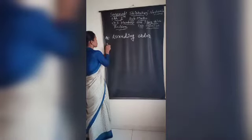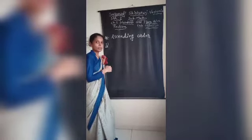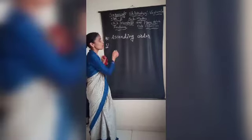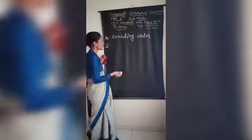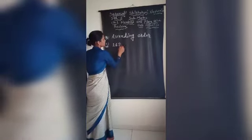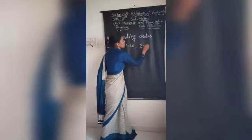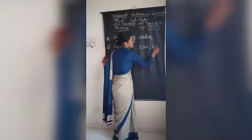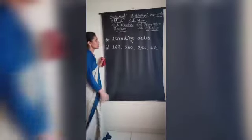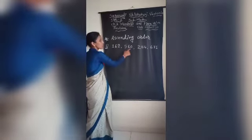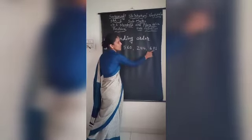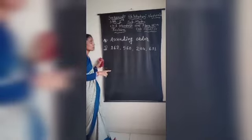Now the next topic is ascending order. Whatever numbers are given to you, you have to arrange them in ascending order. In ascending order, you first write the smaller number and then the bigger number — that means you go from smaller to bigger. Here is an example with four numbers: 162, 560, 284, and 671. We have to arrange these in ascending order.